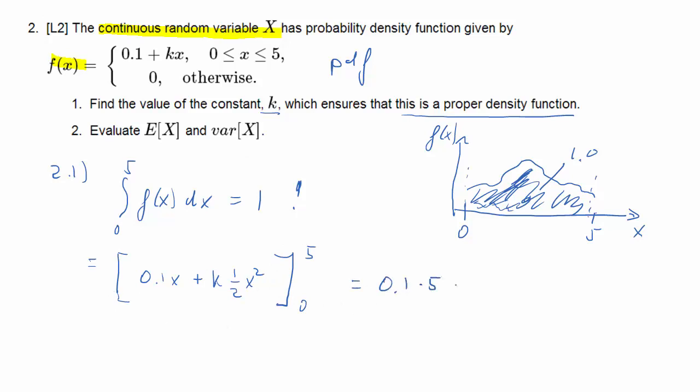So now we plug in the 5, that will be 0.1 times 5 plus k times 1/2 times 5 squared minus, and now the term evaluated at 0, but there's an x. If x is 0, that will be 0, so we subtract 0, and that should be equal to 1.